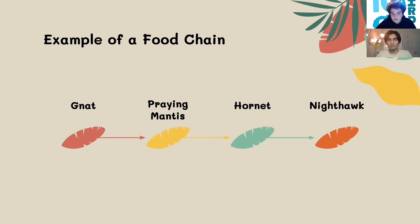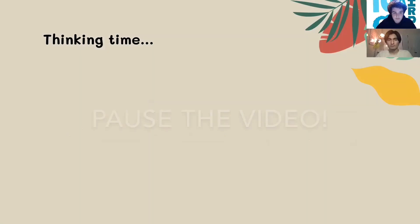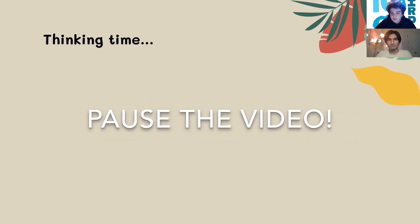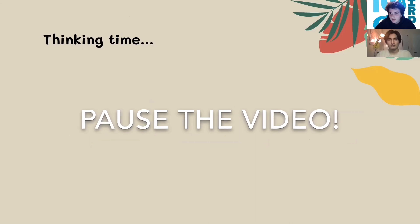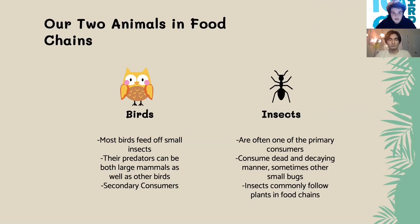Now we have thinking time. Our question is: how do you think insects and birds fit into food chains like this? So here we have our two animals in the food chain. First, birds commonly feed off small insects and their predators can be both large mammals as well as other birds, so they are commonly secondary consumers. Since birds eat insects, insects are often primary consumers.